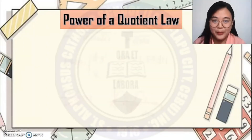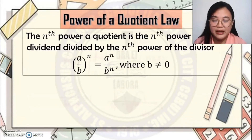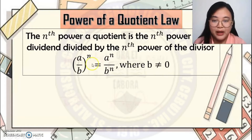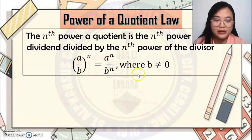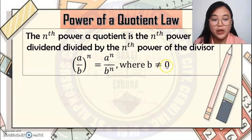Power of a Quotient Law. The nth power of a quotient is the nth power of the dividend divided by the nth power of the divisor. For example, (a over b) raised to n equals a to the n over b to the n — distribute the exponent n to the terms inside the parentheses. Note that b should not be equal to 0, because that would make the term undefined.